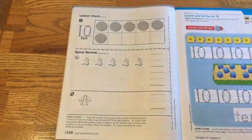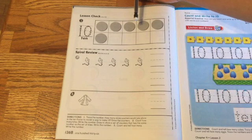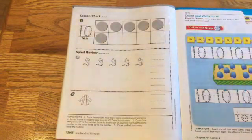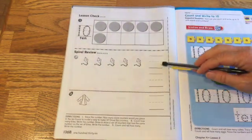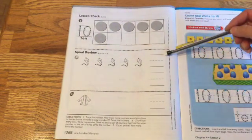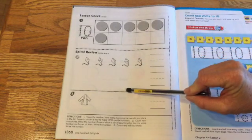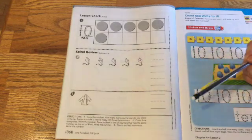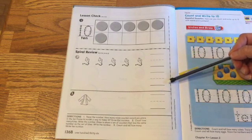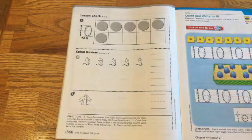It reads, trace the number. How many counters would you place in the ten frame to model a way to make ten? Draw the counters. So make sure that there are ten counters all together in there. Number two. Count how many kites. Write the number. Draw a set of counters that has the same number as the set of kites. So however many kites, you're going to draw that many counters and write the number. They should be the same. How many jackets? And write the number.